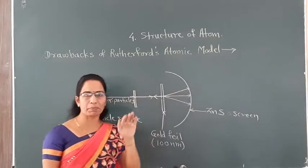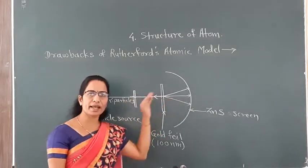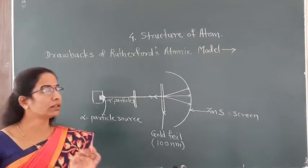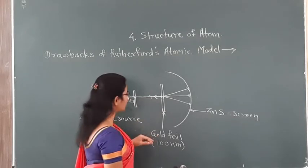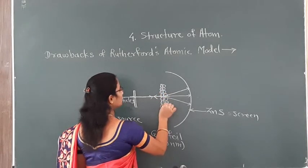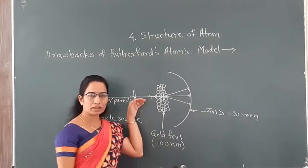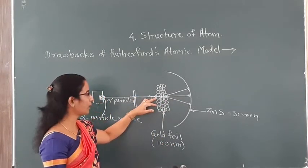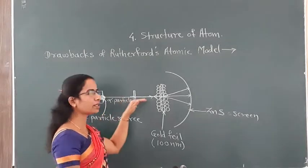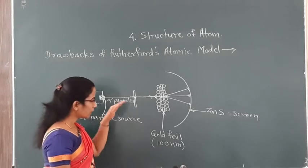Since most alpha particles passed through the gold foil in a straight line, Rutherford concluded that there must be a large hollow or empty space in the atoms of the gold foil. Since so many alpha particles passed through without deflection, most of the space in the atom must be empty. On the basis of the second observation — that some particles were deflected through an angle less than 90 degrees — he made another conclusion.